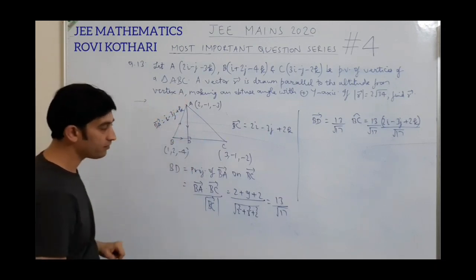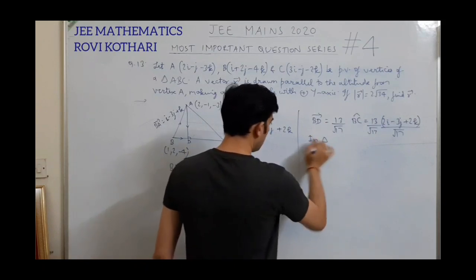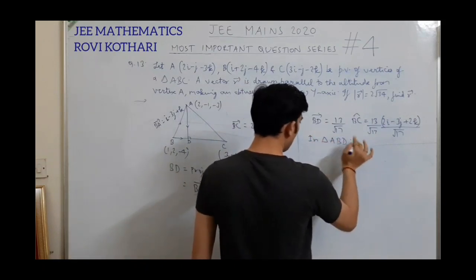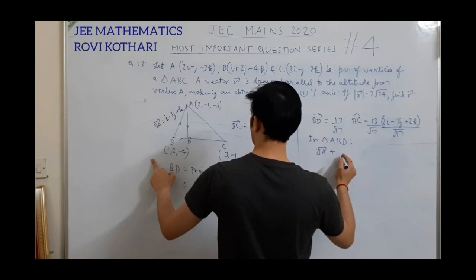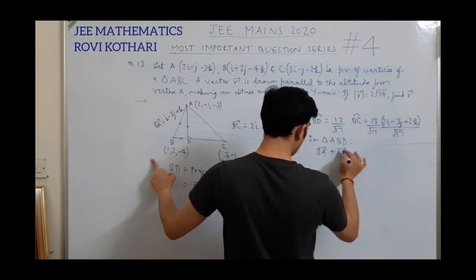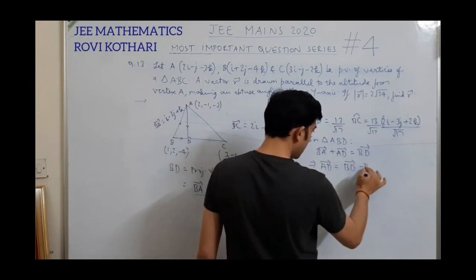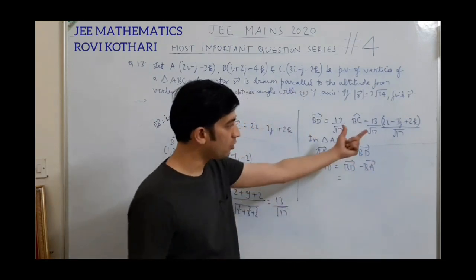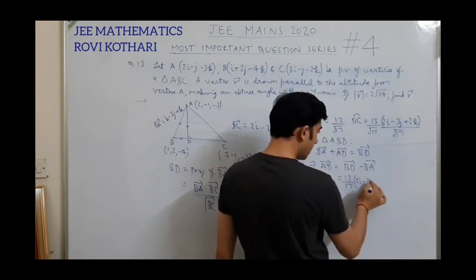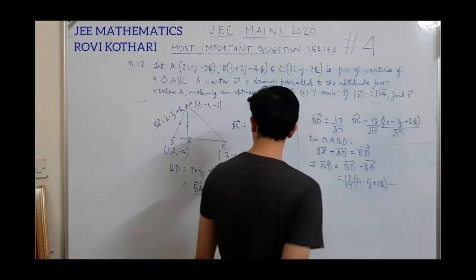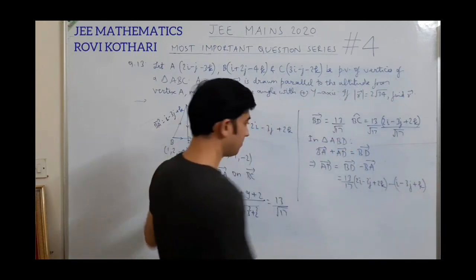Now I need vector AD. Applying the triangle law of addition in triangle ABD: BA + AD = BD. From here, AD = BD minus BA. So vector AD is (13/17)(2i − 3j + 2k) minus (i − 3j + k). Taking LCM of 17: inside we get (26i − 39j + 26k) minus (17i − 51j + 17k). That gives (9i − ... + 9k) after simplification.